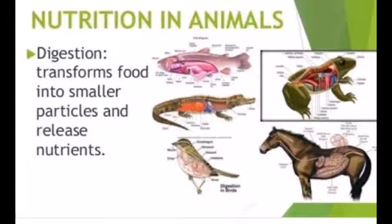Vitamin D sources include butter, milk, cheese, egg yolk, liver, fish oil, and natural fats in the skin that can be converted to vitamin D by sunlight. You need vitamin D to absorb calcium for making bones and teeth and to prevent rickets. In rickets the bones become very soft and deformed. In adults, vitamin D deficiency causes osteomalacia — severe pain in the joints.